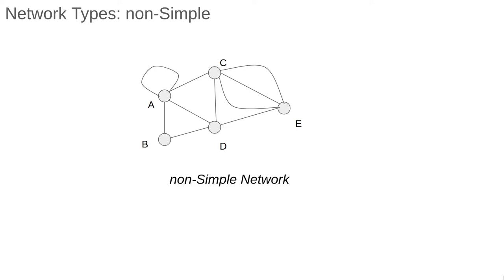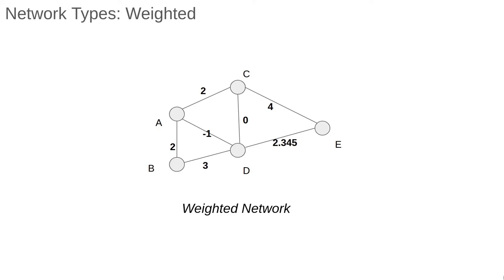Multi-edges on the other hand are typically combined into a single weighted edge. This brings us nicely to a weighted network. Here's an example of one. Each of the edges is given a weight, that is a number, which represents the strength of the connection between the nodes.